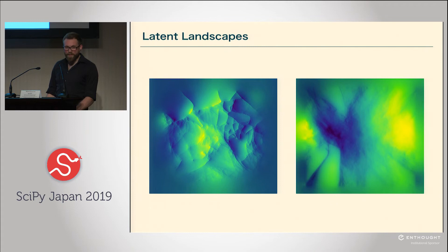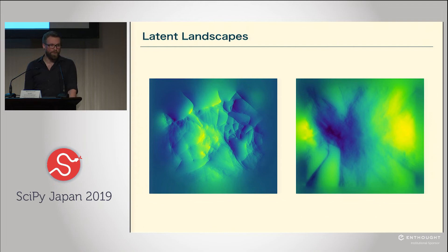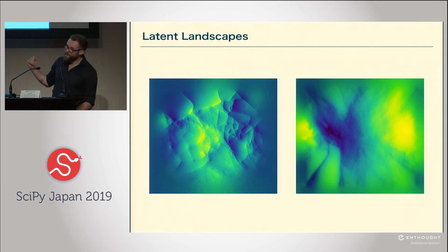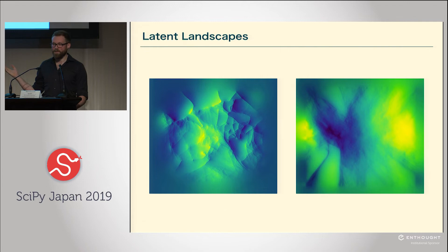Another project of mine is 'Latent Landscapes.' Often when people use generative models for art, they care about the actual final output — what the model generates. I wanted to flip that idea and actually look at the model itself. What you see is essentially visualizing the inside of the model — for those more mathematically inclined, I'm visualizing the metric on the latent space, showing how curved that space is. I find it really beautiful that even the models themselves have this inherent beauty — these abstract landscapes and cloud formations.